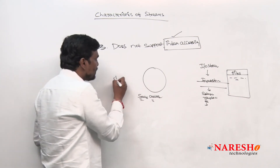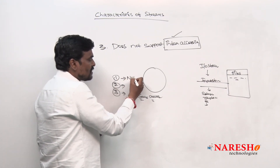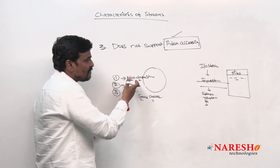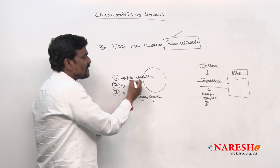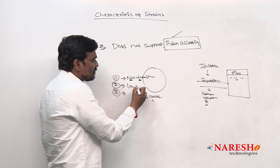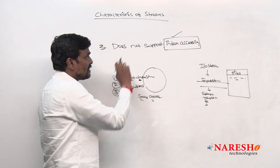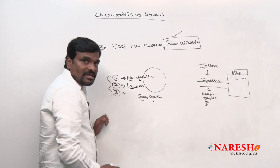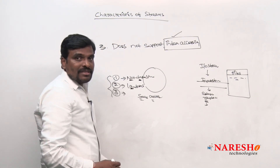I hope you understood these three characteristics. The first is stream is not a data structure — it does not contain data, it just reads data and performs certain operations. The second is streams are designed for lambdas, meaning stream supports functional programming. The third is a stream does not support index accessing. We will see more characteristics in the next video. Thanks for watching. For more videos, subscribe to the Narush IT channel.